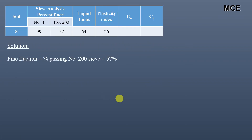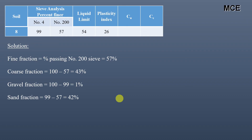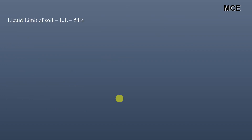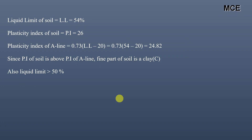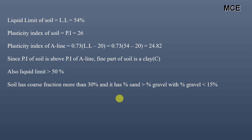For soil 8, fine fraction is 57%, coarse fraction is 43%, gravel fraction is 1%, sand fraction is 42%. More than 50% passes sieve 200, so it is a fine-grained soil. Liquid limit is 54%, PI is 26%, A-line PI is 24.82. PI is above the A-line so fine part is clay. Liquid limit is greater than 50%. Coarse fraction is more than 30% with sand greater than gravel and gravel less than 15%, so the soil is Sandy Fat Clay, group symbol CH.